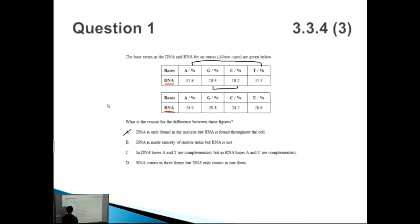DNA is made entirely of a double helix but RNA is not. This answer definitely sounds a lot better. We talked about how the ratios of A to T and C to G are meant to be about the same, and that's because DNA is a double helix structure.